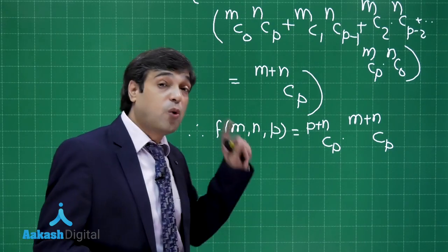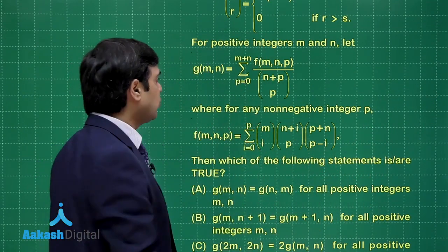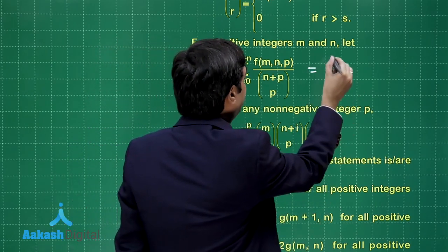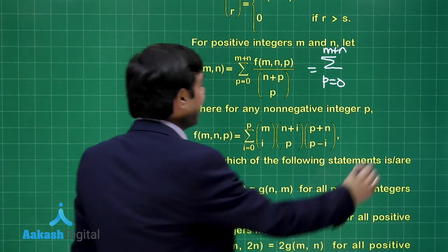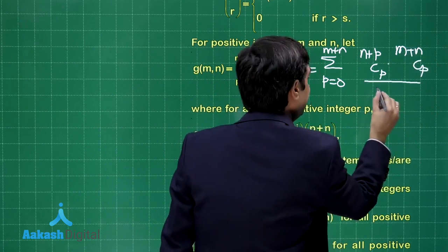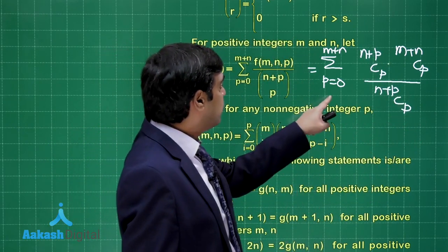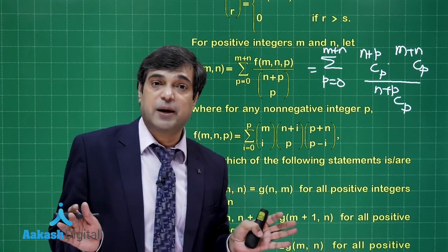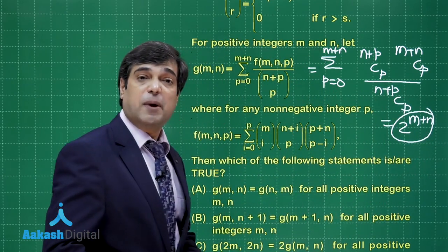Now G(M,N) = summation P=0 to M+N of F(M,N,P) / (N+P)_C_P = summation P=0 to M+N of (N+P)_C_P · (M+N)_C_P divided by (N+P)_C_P. The (N+P)_C_P terms cancel, leaving summation P=0 to M+N of (M+N)_C_P, which is the sum of all binomial coefficients of (1+x)^(M+N), giving 2^(M+N). So G(M,N) = 2^(M+N).